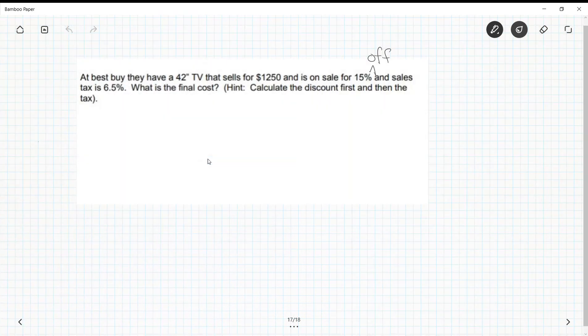Now let's look at this example. At Best Buy they have a 42 inch TV that sells for $1250, it is on sale for 15% off, and sales tax of 6.5%. What is the final cost? So we always take the discount first and then we do the tax. We don't do tax first and then take the 15% off because we pay tax on what we actually buy.